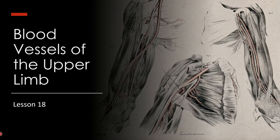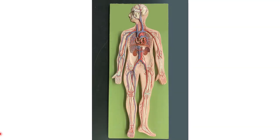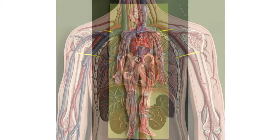This video accompanies lesson 18 in your lab manual: blood vessels of the upper limbs. By the end of this you should be comfortable tracing a drop of arterial blood from the heart to the digits on both the right and left sides, and venous blood from the digits back to the heart via both the deep and the superficial routes. We are going to be using the flat man circulatory model and the large arm model to identify these vessels.